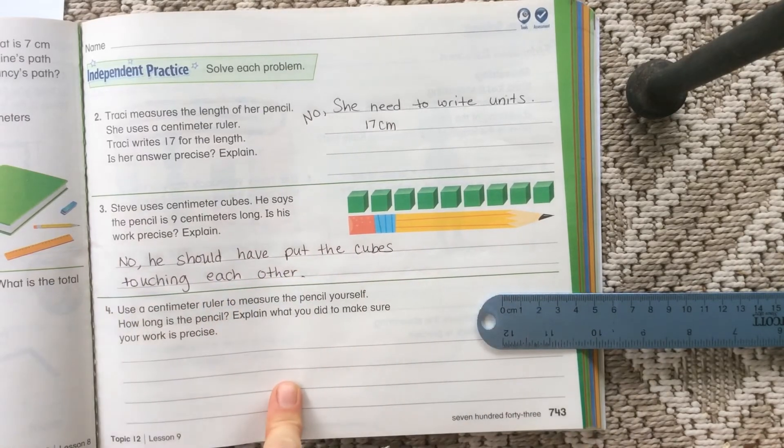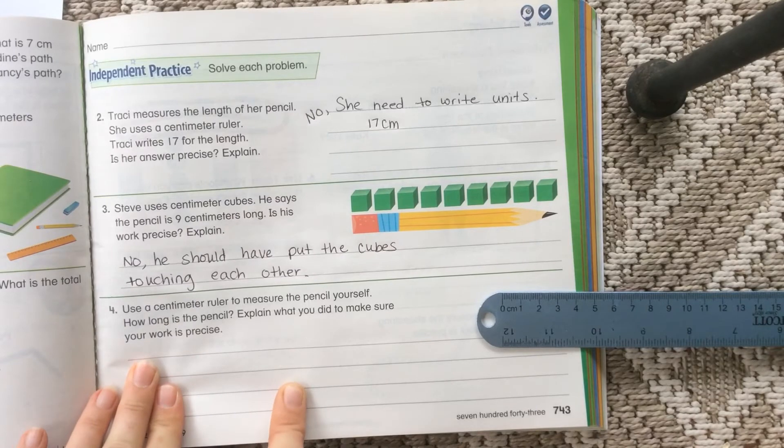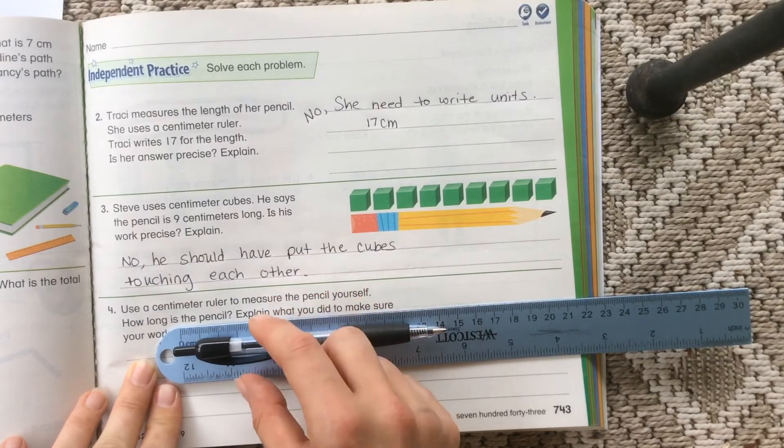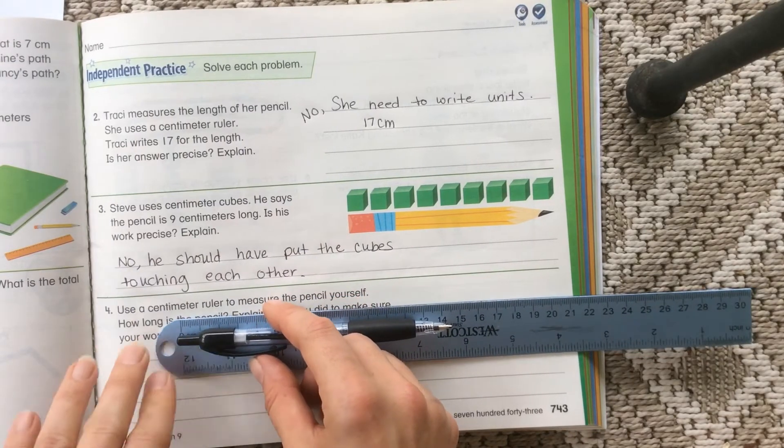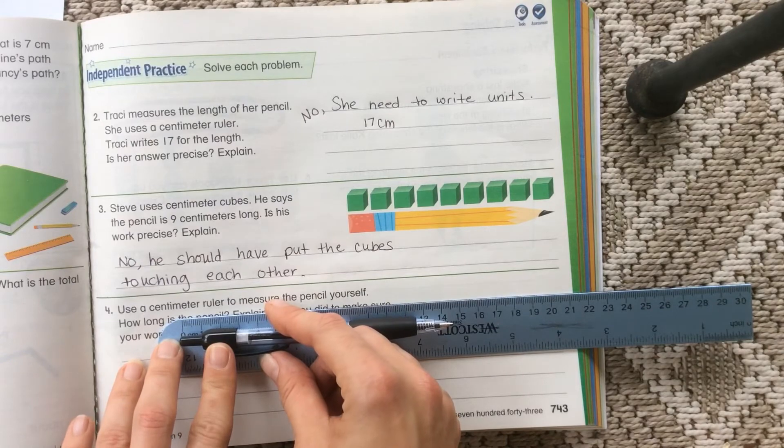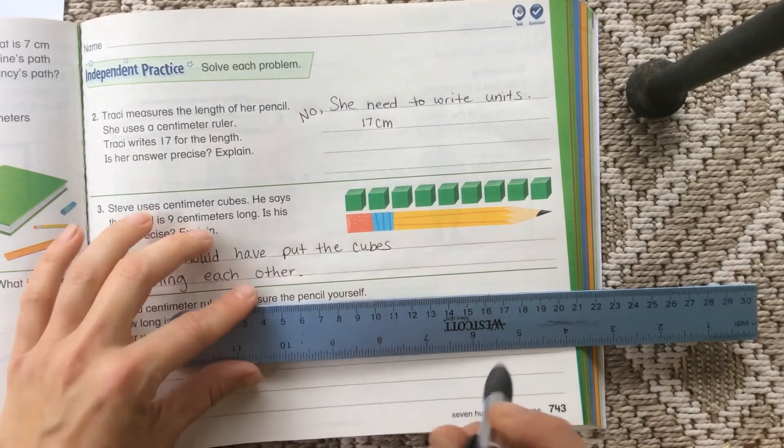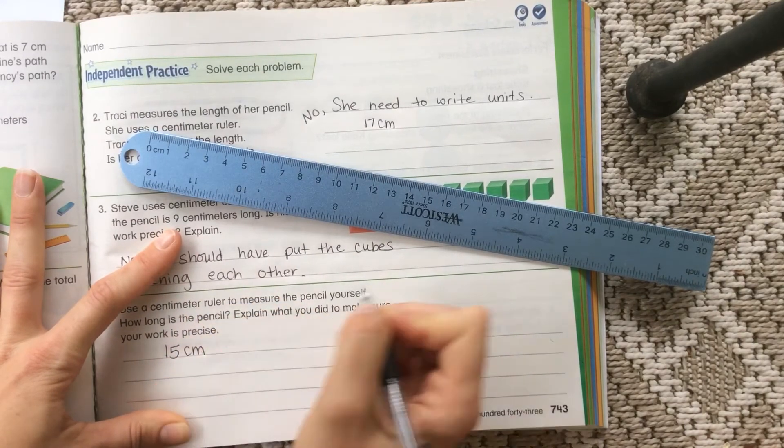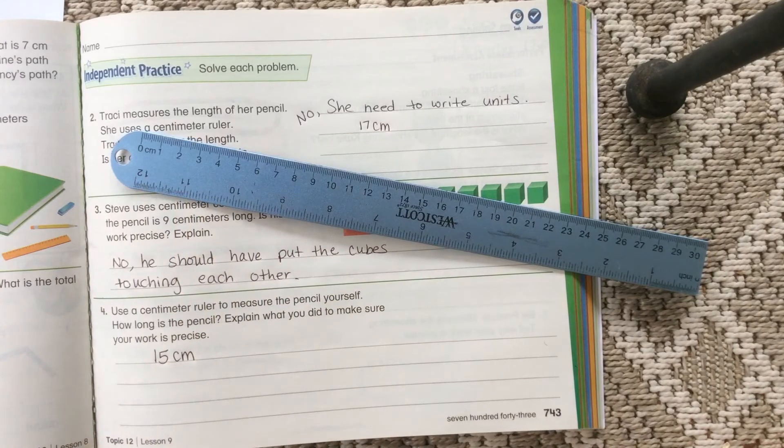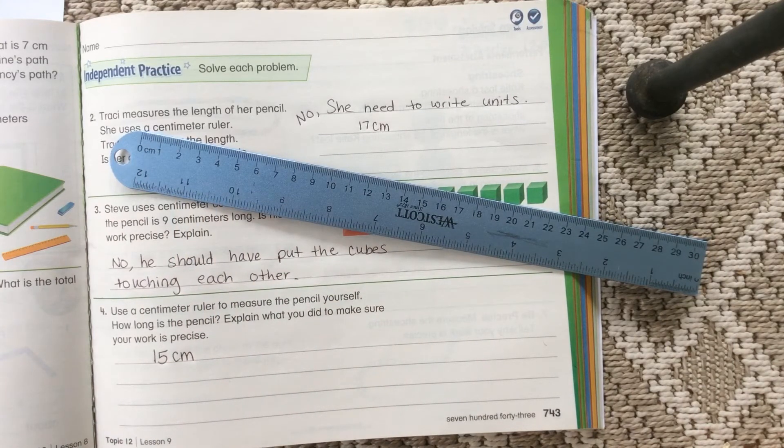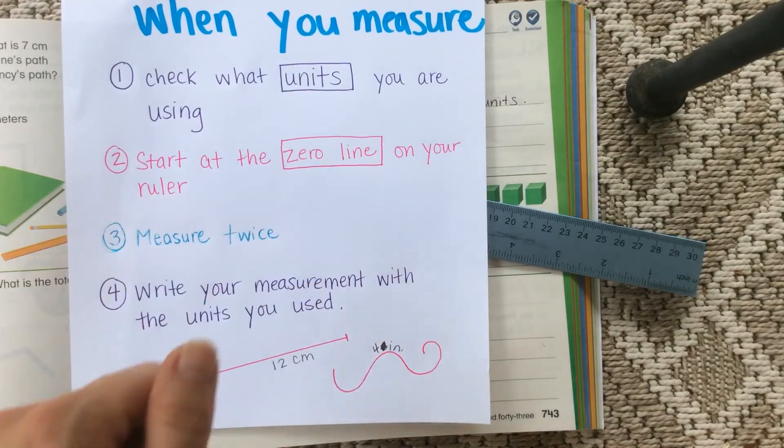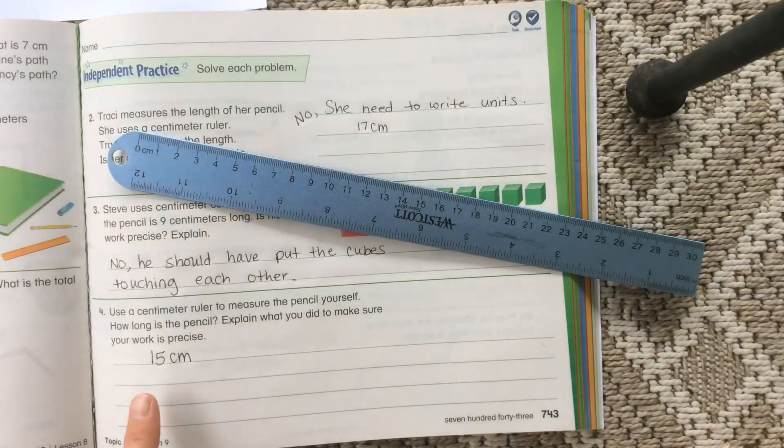Alright. So here, you should have used a centimeter ruler to measure your pencil. What I'm looking for, I know I'm writing in pen, but this is so you can see it, as you know. When you, what I'm looking for, one, is that you start at a zero line. And then, mine's closest to 15. When you wrote it, make sure that you wrote CM for centimeters. And then, write two, you should have two ways that you were precise. So hopefully you could say that you started at the zero line. Maybe you measured twice. Maybe you, hopefully you checked which units you were measuring in. And hopefully you wrote the units.